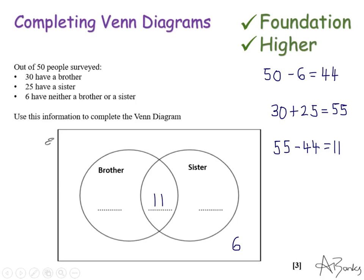So that's how we work out the centre. Now we've got 30 people have a brother, so this entire brother circle adds up to 30. So this number here must be 19. And 25 have a sister, so this entire circle adds up to 25, so that must be 14. Now we can just double check we've done this right. All of my numbers here should add up to 50. So let's have a look. That's 19, 30, 44, 50. And yes, I do. So I know I've definitely done this right. All of my numbers make sense.